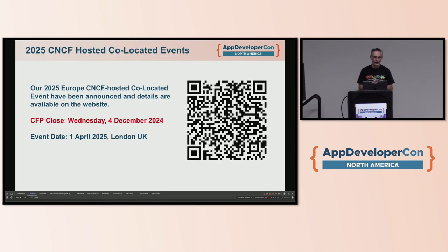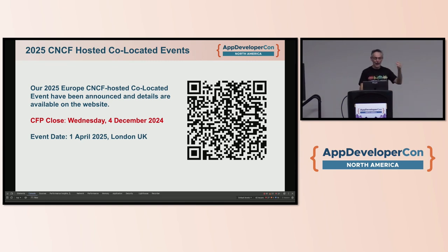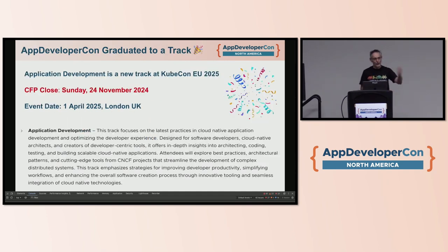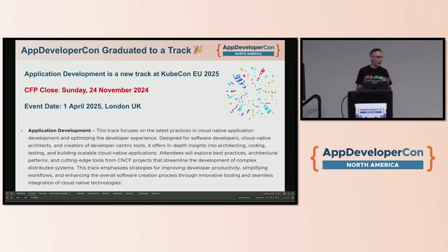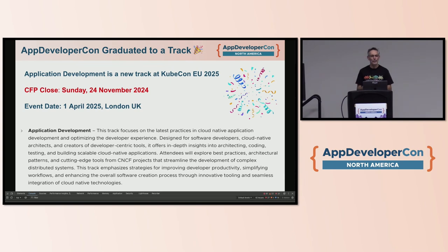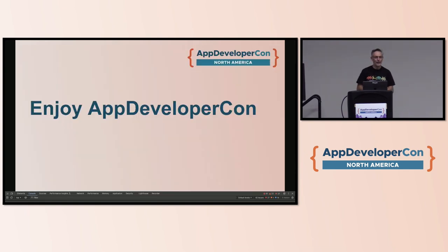One thing I want to point out: these co-located events all have CFPs and we'll be holding them again inside KubeCon Europe. But unfortunately there will not be an App Developer Con in Europe — and the reason is because we've actually graduated this co-located event into a full track inside KubeCon. We're turning this into a three-day track at KubeCon EU, which means more types of events and workshops. I'm super excited because now we can have even more CFPs submitted. You've only got two weeks — it closes very soon on the 24th of November. Please submit CFPs because we really want to show the CNCF how important this is. So with that, thank you — enjoy App Developer Con, and come find me if you want any help today.